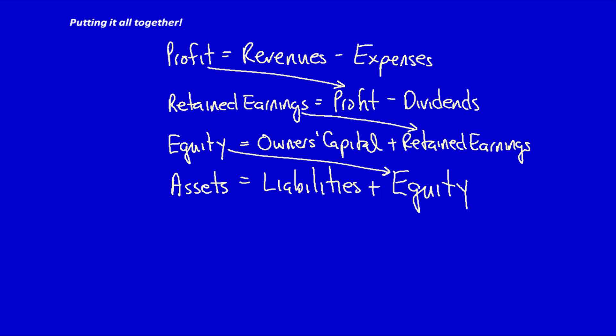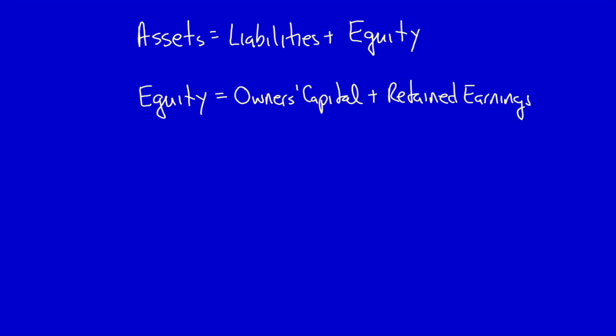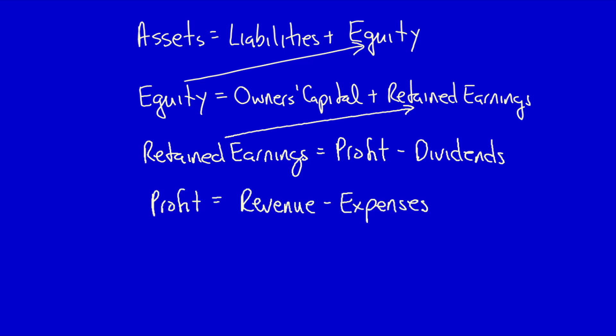We can also flip this around, starting from the basic accounting equation and ending with profit. Assets equals liabilities plus equity. How do we calculate equity? Equity is equal to owners capital plus retained earnings. How do we calculate retained earnings? Retained earnings is equal to profit minus dividends. How do we calculate profit? Profit equals revenue minus expenses.